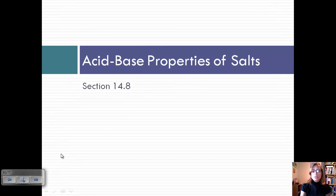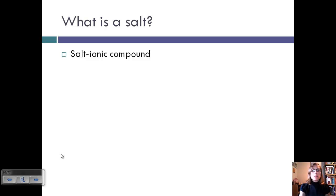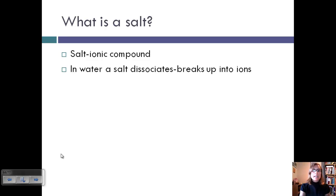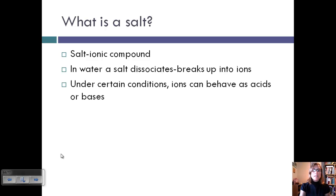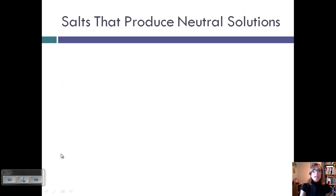Today we're going to talk about section 14.8. First we're going to talk about what is a salt. A salt is basically an ionic compound. In water, a salt dissociates or breaks up into its ions. Also under certain conditions, ions can also behave as either acids or bases. So we're going to look at some of those situations.